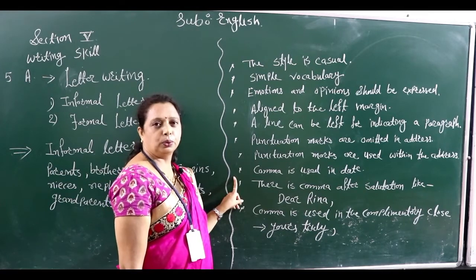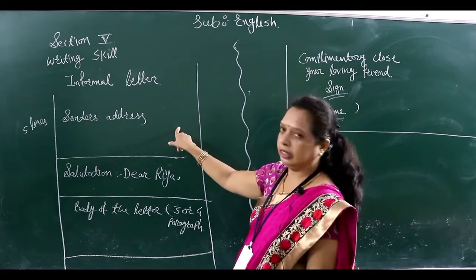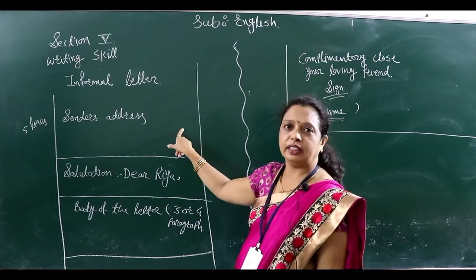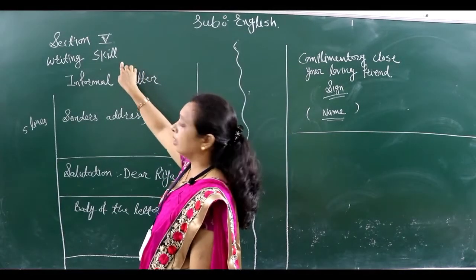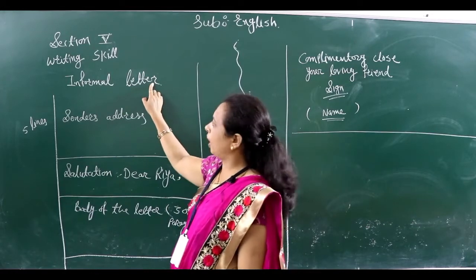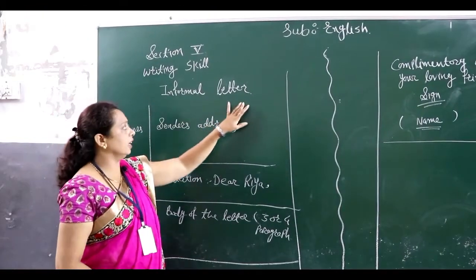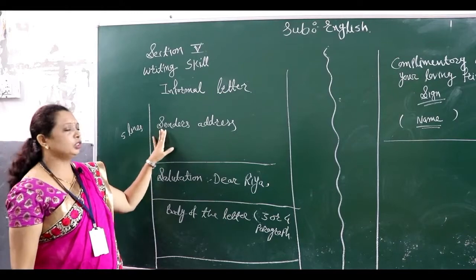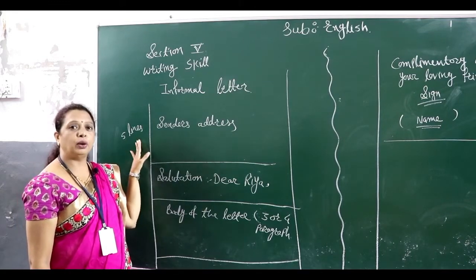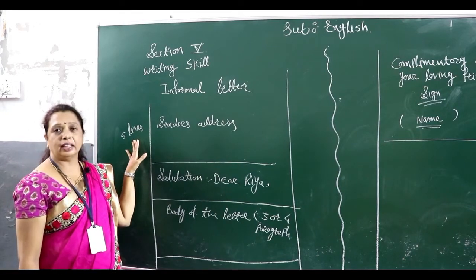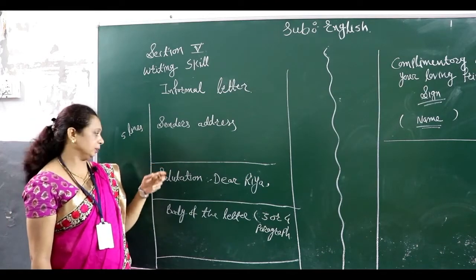Now we move towards how to write an informal letter — what is the format. When you write an informal letter as an answer in your answer sheet, first you have to mention section 5, then writing skill, and then the title 'Informal Letter.' After leaving one line, start your letter writing. First, you have to mention the sender's address — a proper 5-line address.